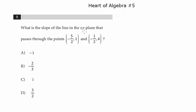What is the slope of the line in the xy-plane that passes through the points (-5/2, 1) and (-1/2, 4)?